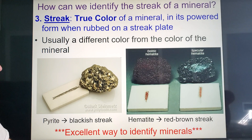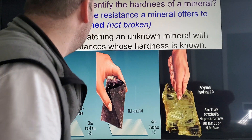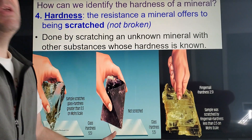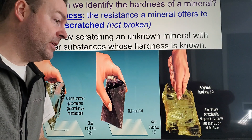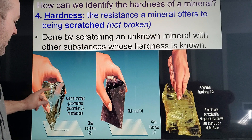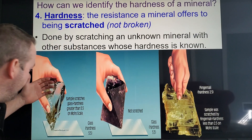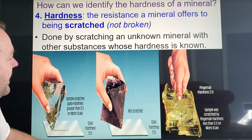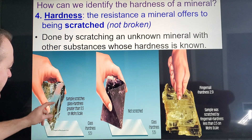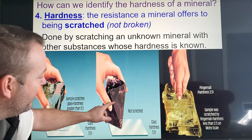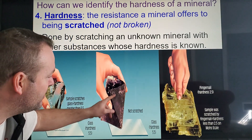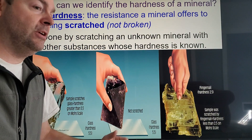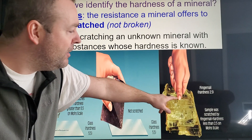Hardness is the resistance to being scratched. The harder something is, the less likely it will be scratched, and the easier it can scratch other things. Here we have a piece of quartz on a glass plate easily scratching it, so it must be harder than glass. Glass has a hardness of about 5.5, so this must be 5.5 or harder. The other sample does not scratch the glass, so it must be softer than 5.5.